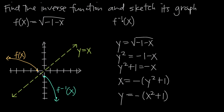Then we replace y with inverse notation f negative 1 of x. So instead of y equals negative quantity x squared plus 1, we write: f negative 1 of x equals negative quantity x squared plus 1. This is the equation of the inverse function. To summarize the steps: replace f of x with y, solve for x, swap x and y, then replace y with f negative 1 of x.